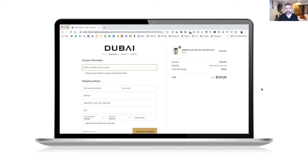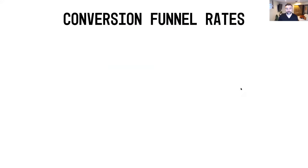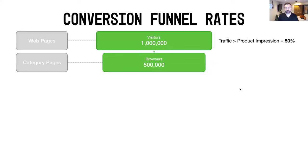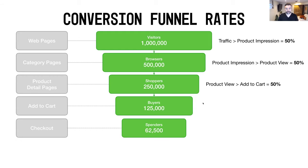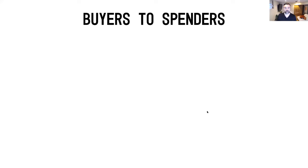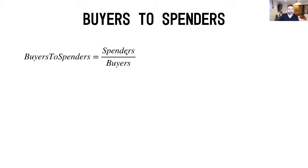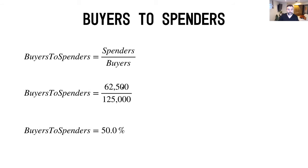Now let's look at the math and understand how this works in the traditional e-commerce funnel. We've built the funnel from the top — visitors to browsers, then shoppers, then buyers — and today we're looking at the individual conversion rate of buyers to spenders. We're looking at add to cart versus checkout, using 50% as a placeholder. For buyers to spenders: 62,500 spenders over 125,000 buyers yields a 50% conversion rate.